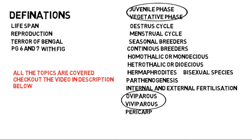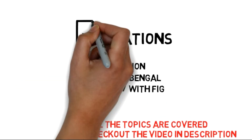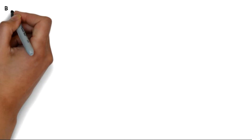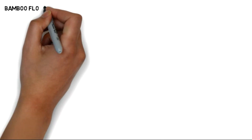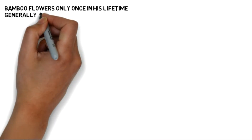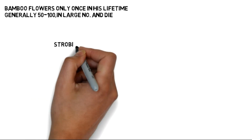Pericarp: the walls develop in the fruit and further develop into the thick wall of seeds — this is known as pericarp. These are the definitions and lifespan topics to complete. Bamboo flowers only once in its lifetime, generally after 50 to 100 years, and many flowers die after that.